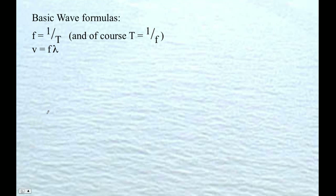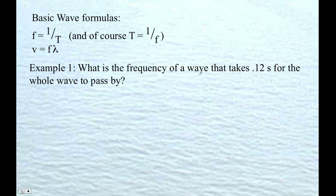So let's bust out some examples here. The first one is, what is the frequency of a wave if it takes .12 seconds for the wave to pass by? So the period is .12 seconds, so therefore the frequency will be one over the period. So I just go one divided by .12, and I get that the frequency is 8.33 repeating. We only have two sig figs, so 8.3 hertz or 8.3 waves per second.